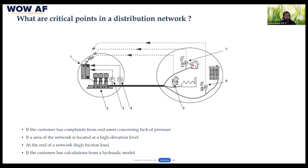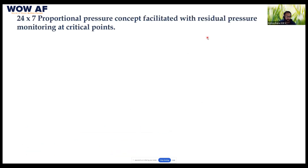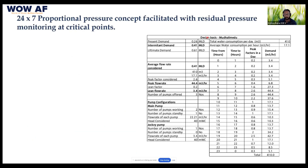Coming to the 24/7 proportional pressure concept — here I have given a table showing a live scenario we designed for one site, a village distribution network with around 5,000 people. Based on that, we have an intermittent demand of 410 cubic meters.